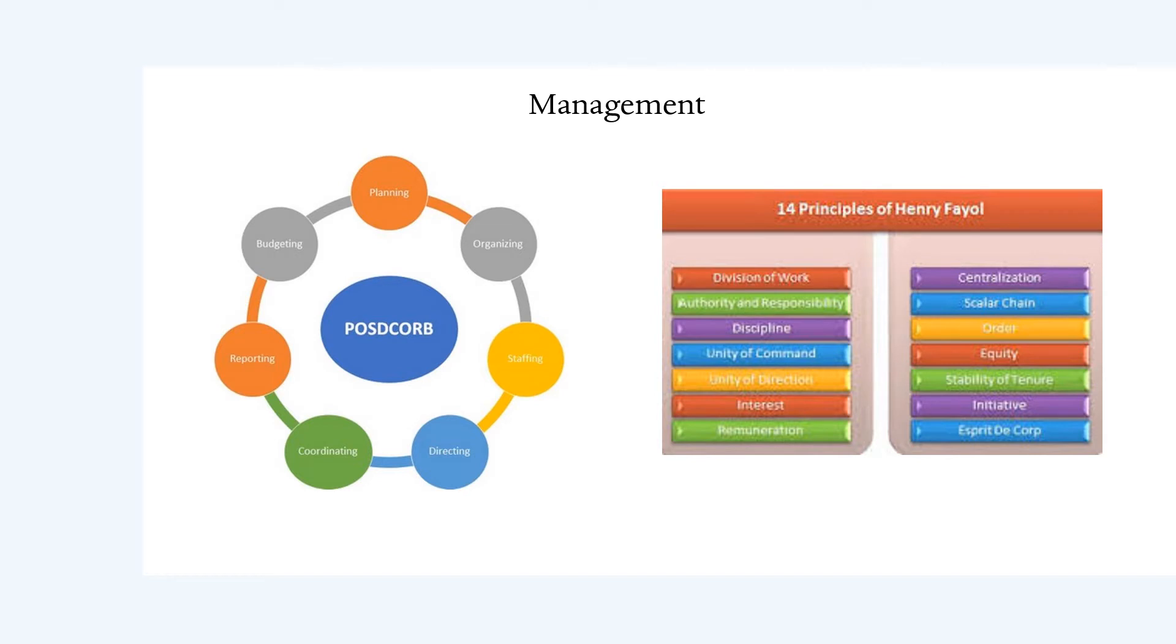Number two, management. I think of Gulick's POSDCORB and Fayol's 14 Principles of Management. They both are very similar. The division of work, I understand, is necessary among the targeted homelessness programs and agencies because everyone needs to know what they do. However,